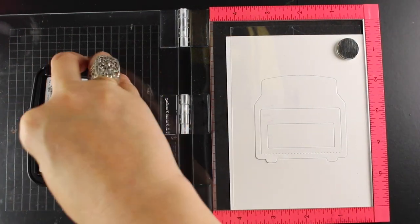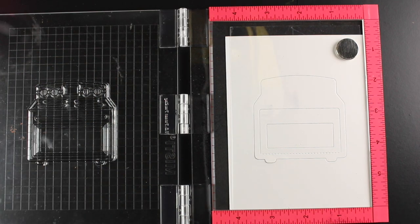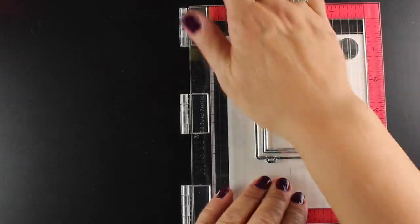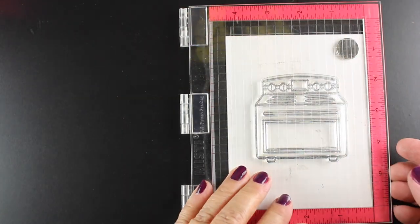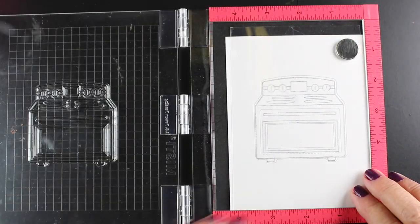And the acetate means that I can see where I'm going to actually stamp it and make sure it's going to line up inside my die cut, because I want it to line up perfectly. And so here I'm stamping it.